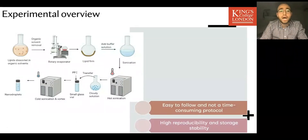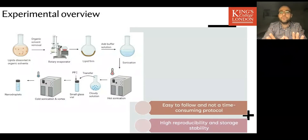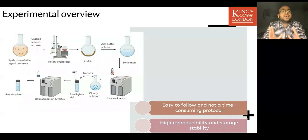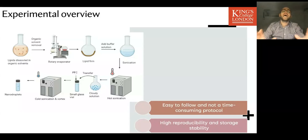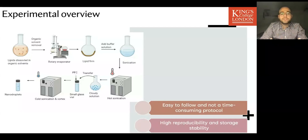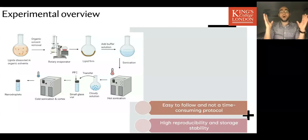How do we make these nanoparticles in our lab? It's a very easy, straightforward process with high reproducibility. We mix the lipids, remove the organic solvents using a rotary evaporator, and then hydrate the lipid film. After a series of hot and cold bath sonications and the addition of the perfluorocarbon, we have our nanodroplets, which we then need to characterize.